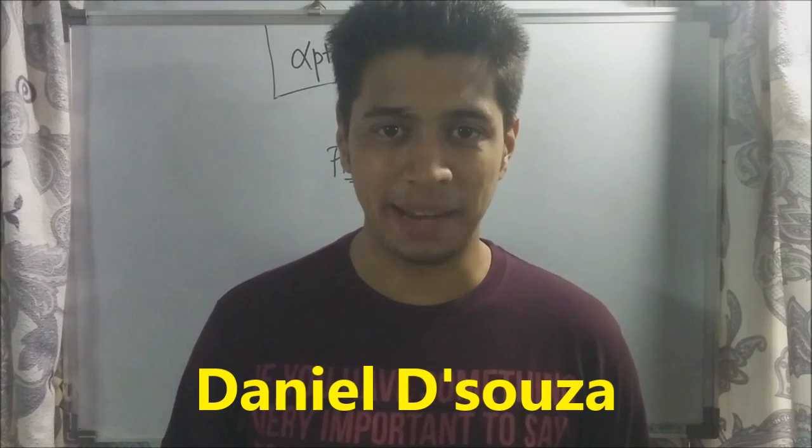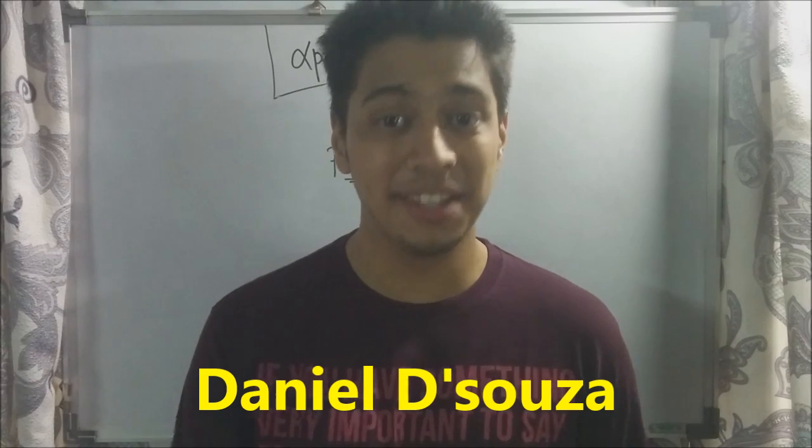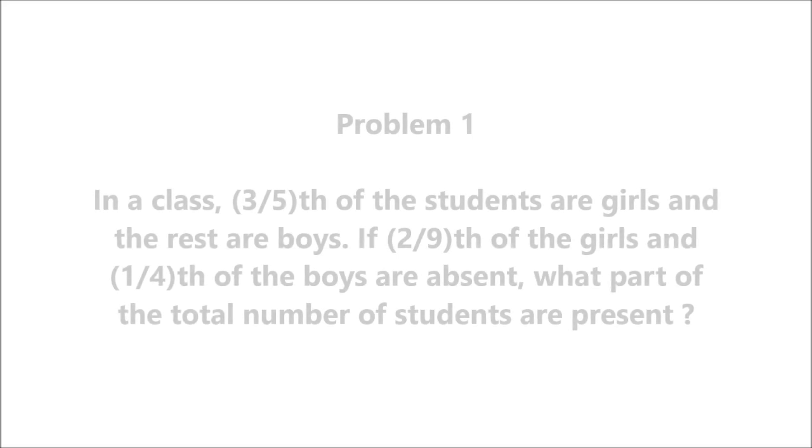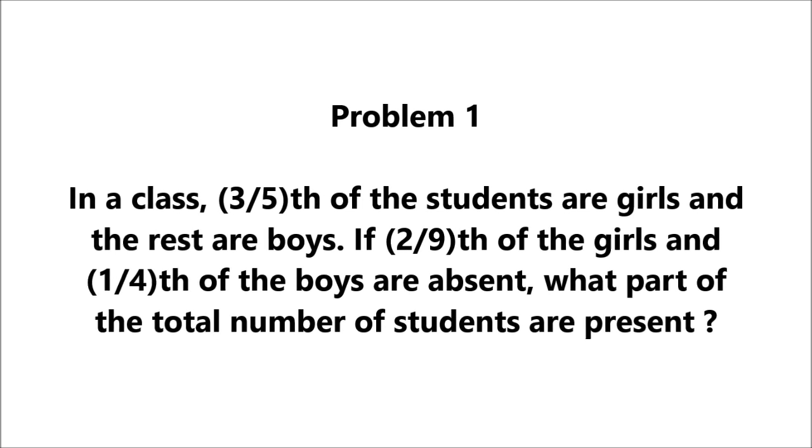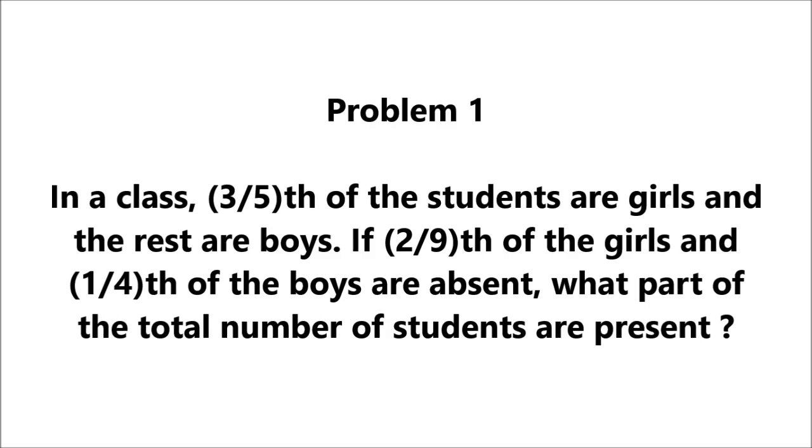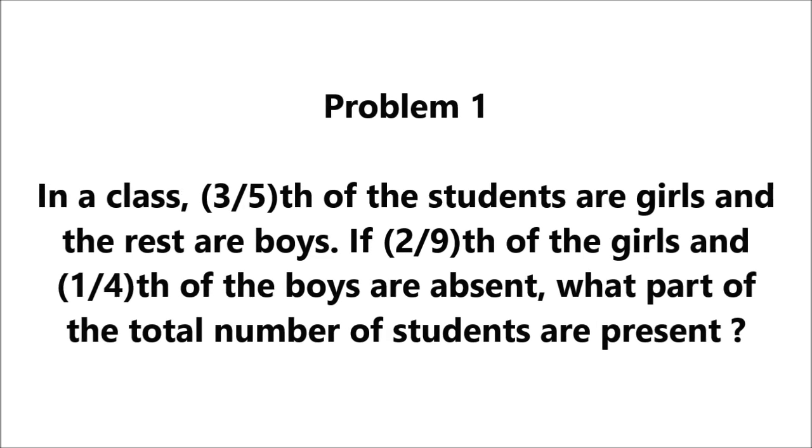Hi, I am Daniel Souza and welcome to Aptitude Academy. This is problem set 3, here is your first problem. Problem 1: In a class, 3/5 of the students are girls and the rest are boys. If 2/9 of the girls and 1/4 of the boys are absent, what part of the total number of students are present?